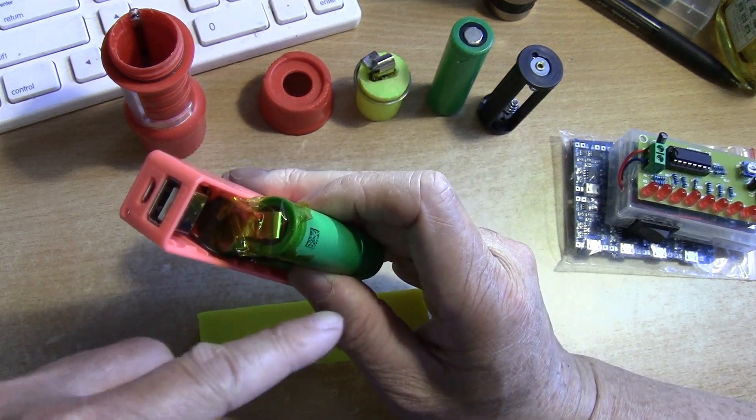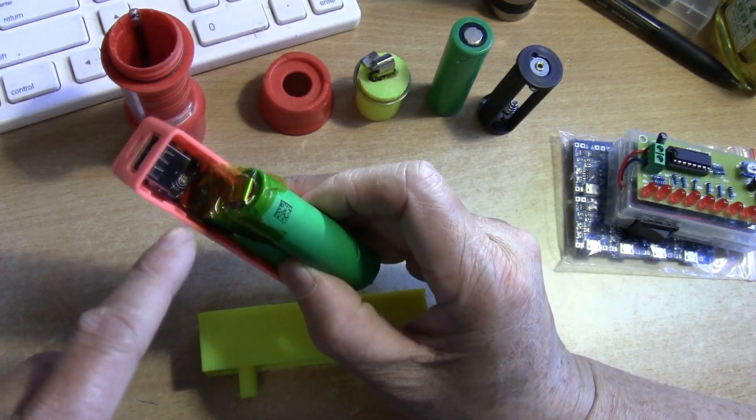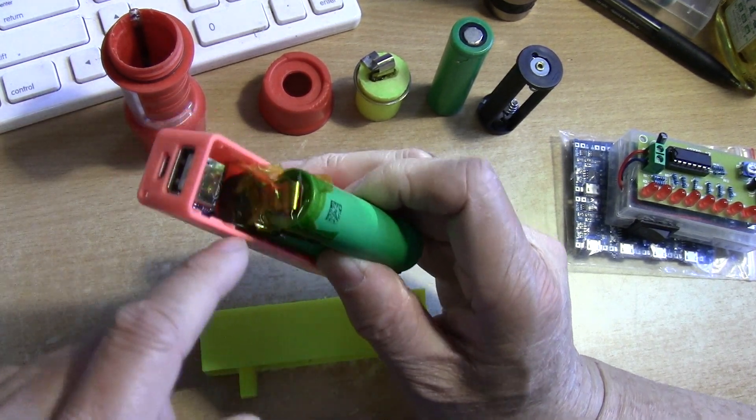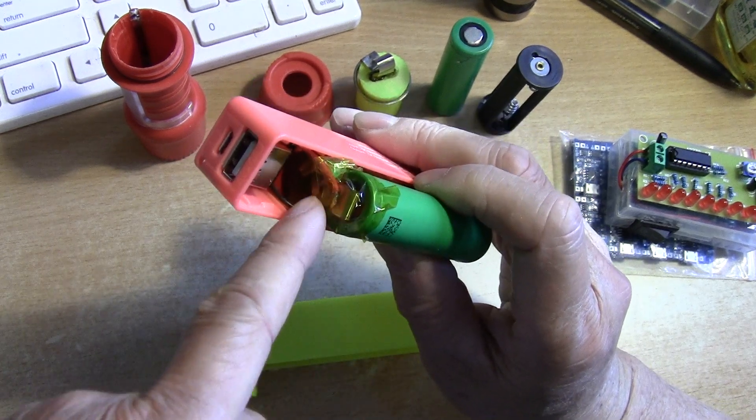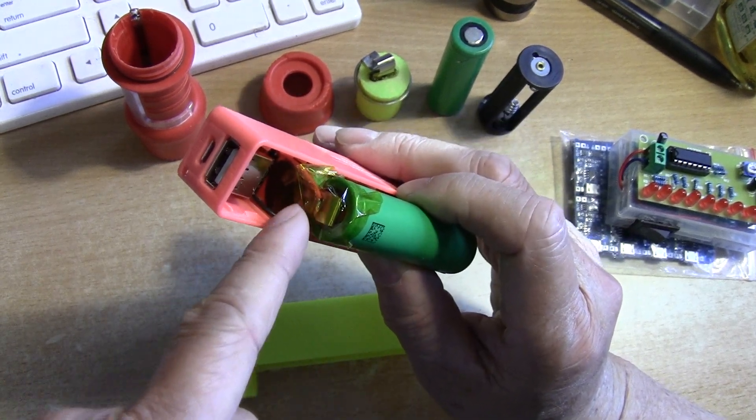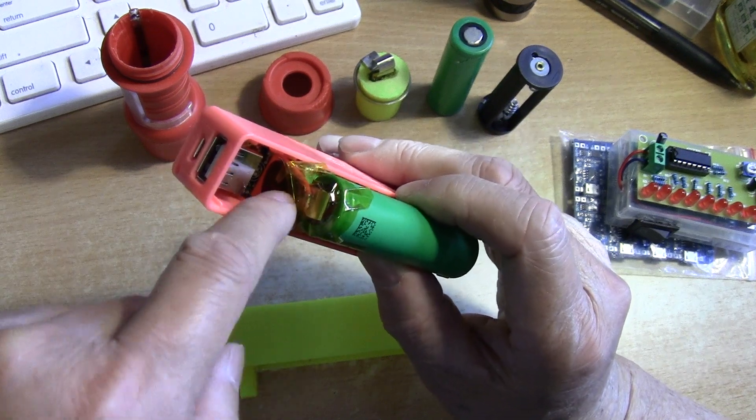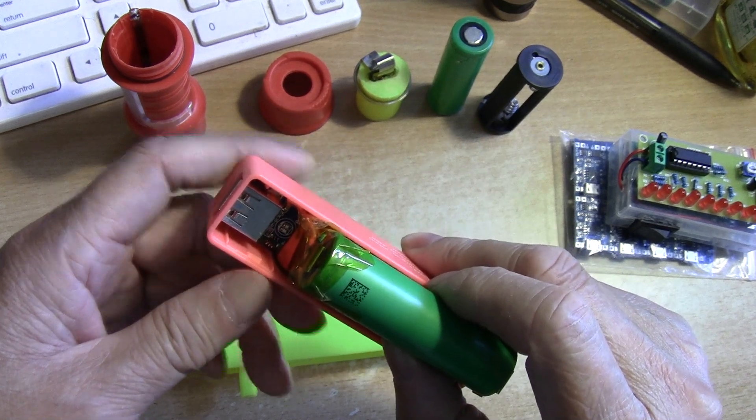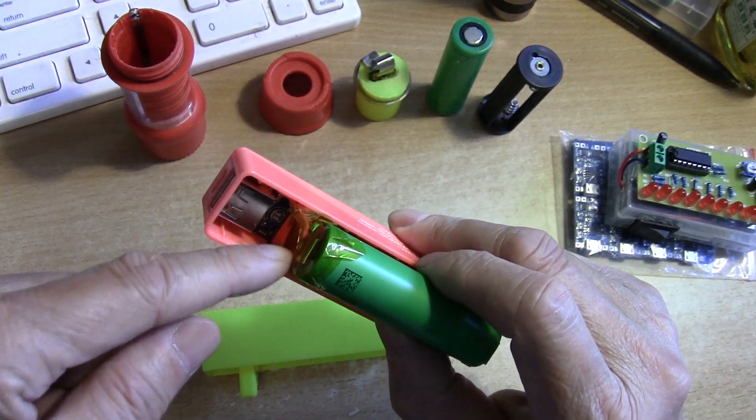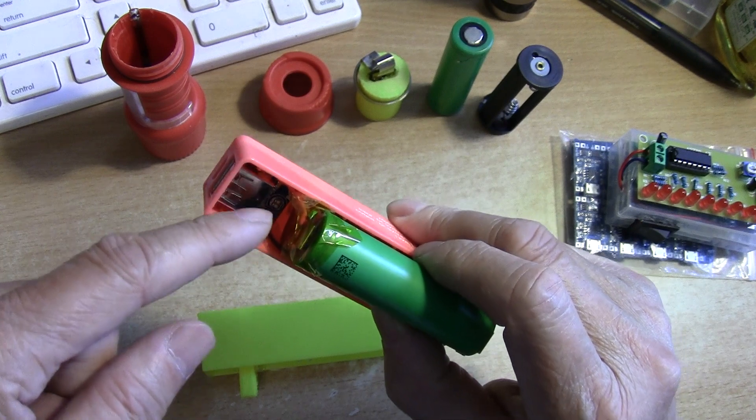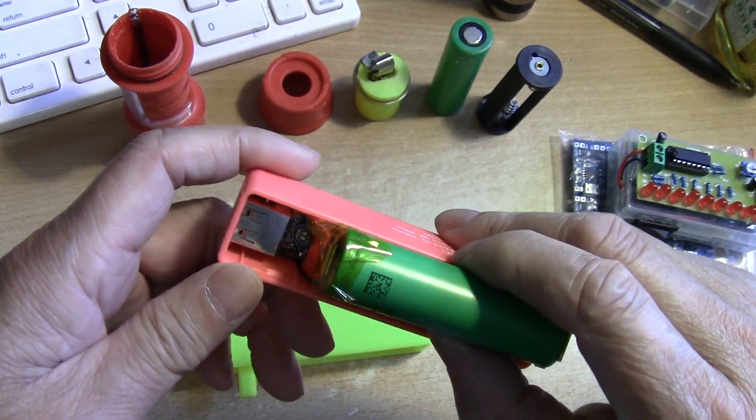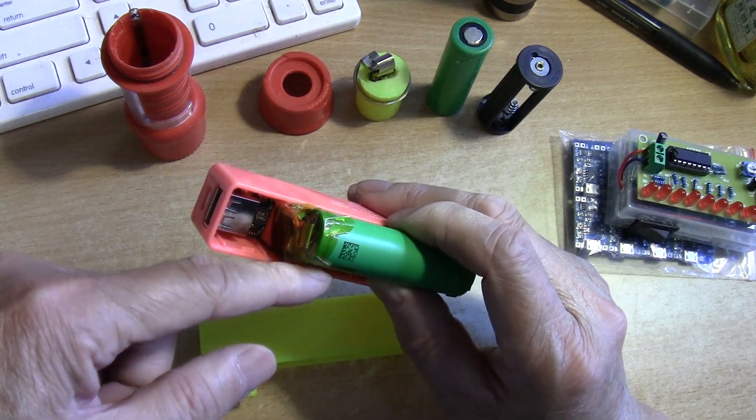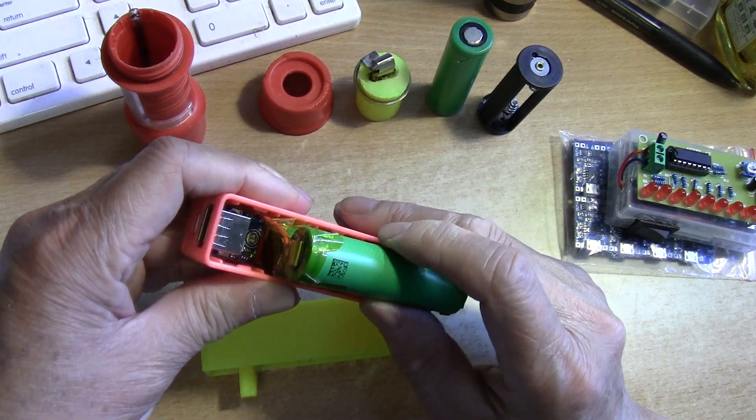When you put an 18650 in close proximity with a circuit board, you have to try to insulate it. There's a cardboard-like material on the bottom cell, the positive side, to prevent it from coming into contact with the circuit board. On top of that, I wrap a piece of Kapton tape on it to further insulate it.